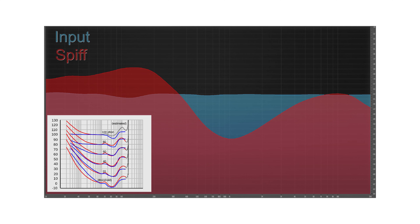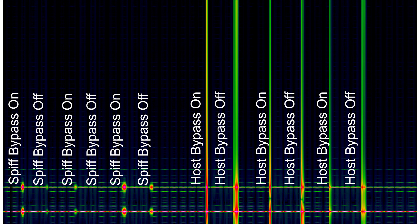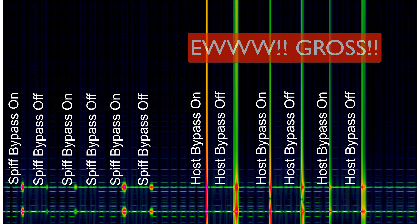If you watched the video about Soothe, this will be familiar. I ran some pink noise through Spiff with most settings maxed, and this is what I saw — a Fletcher Munson curve. In the lower left you see the response of the human ear to various frequencies, and the larger picture, particularly in red, shows how Spiff responds to various frequencies. In the Soothe video, bypass caused some clicks, but with Spiff, bypass works absolutely beautifully — as long as you use the bypass inside Spiff and not the host bypass.